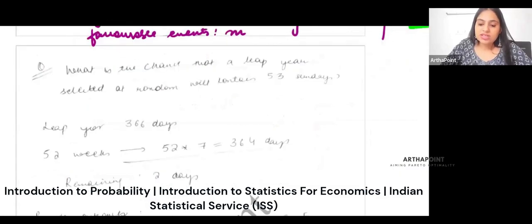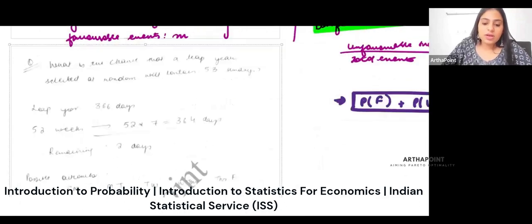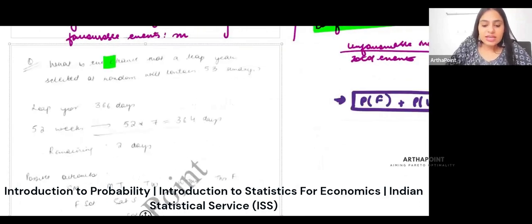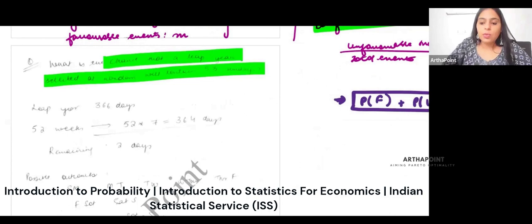Okay, now let's take some questions. This is the first question: what is the chance that a leap year selected at random will contain 53 Sundays? Try to do it yourself also. A leap year has one more day than the usual number of years.